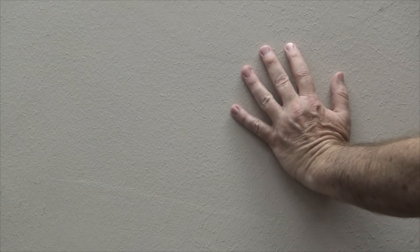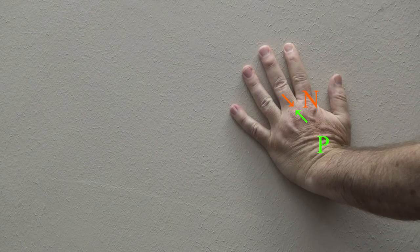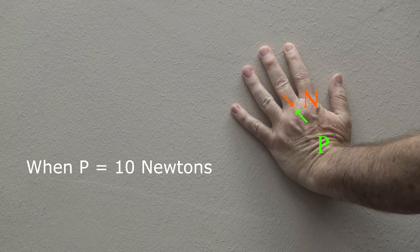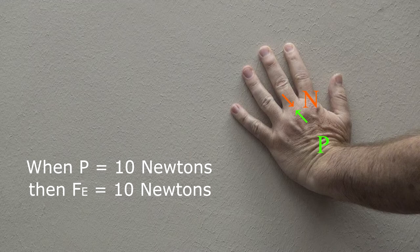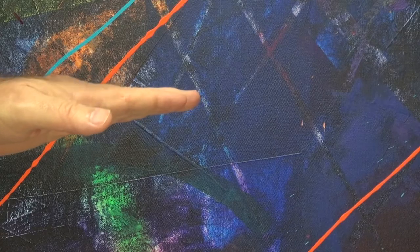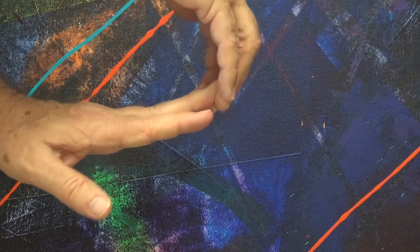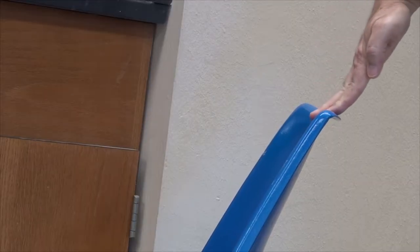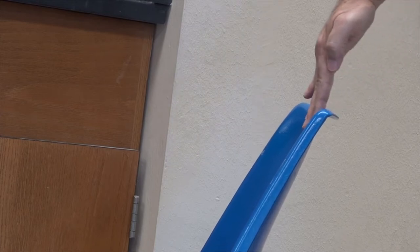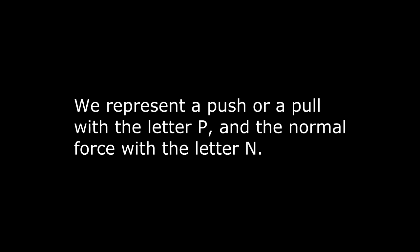Even your sense of touch is generated by the electrical force of displaced surface atoms. When you push against the wall, the wall pushes back against you with its equal but opposite normal force that is perpendicular to the surface. For example, if you push with a force of 10 newtons against the wall, then the electric force pushes back with a force of 10 newtons, which makes the normal force be 10 newtons. The normal force N indicates how greatly two surfaces are squeezed together. Your fingers serve as a force meter as they bend whenever a force exists on them. When you press your fingers against a chair, the chair pushes back with its equal and opposite normal force. We represent a push or a pull with the letter P and the normal force with the letter N.